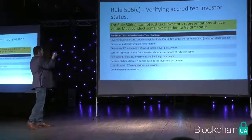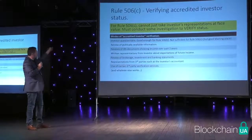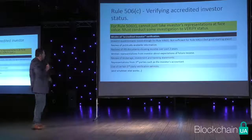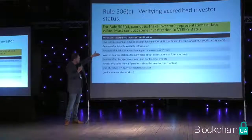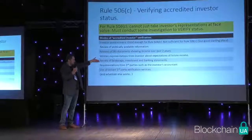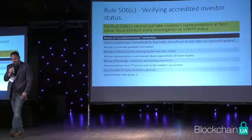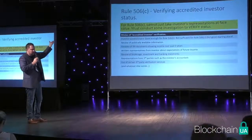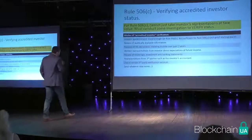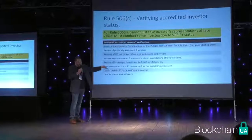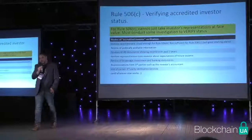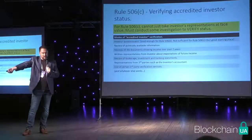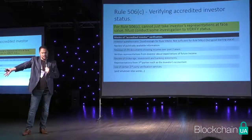Here's how you can verify accredited investor status: have them fill out an investor questionnaire explaining why they're accredited — that's a good start but not the end. You can look up their public records, tax records, brokerage statements, investment statements, and banking statements. You can have their accountant sign a letter confirming they have over a million dollars in net assets. And there are third-party verification services — something like verifyinvestor.com and several others — where you don't have to verify it yourself. It's cheap, around $10 or $15 per investor, and certainly worth it.